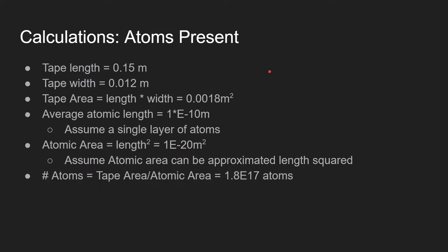Now to find the number of atoms present, I found the area of the piece of tape, like so, and then estimated the average area of an atom as the average length of an atom, one angstrom, squared to get this value. Then I divided the total tape area by atomic area to get this value.